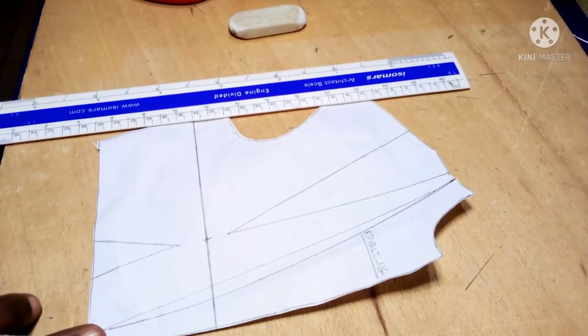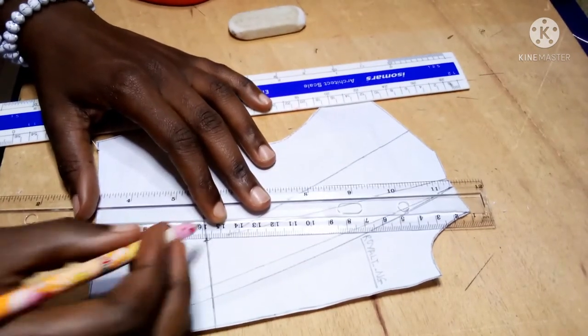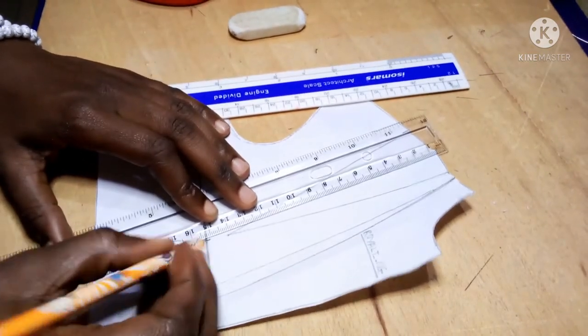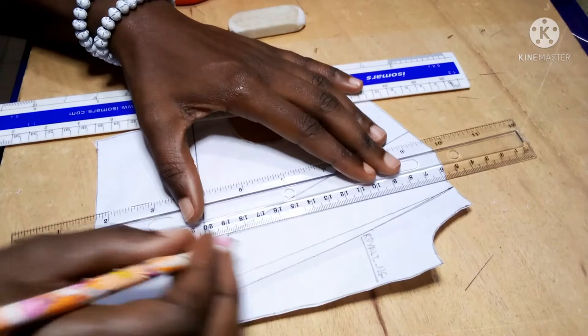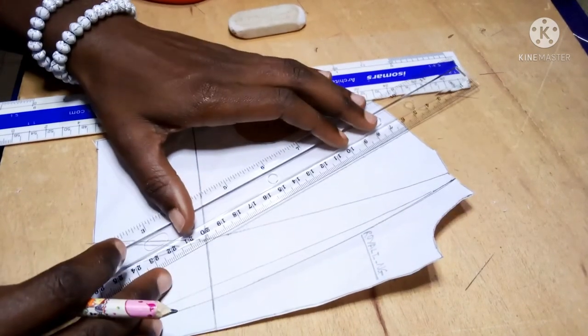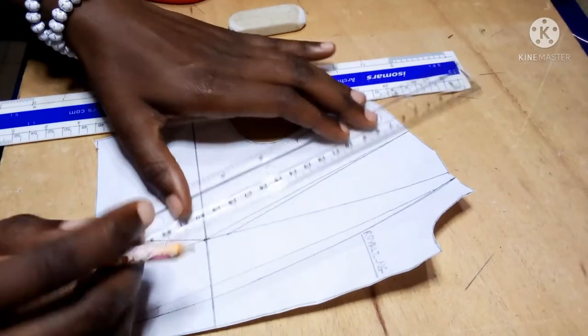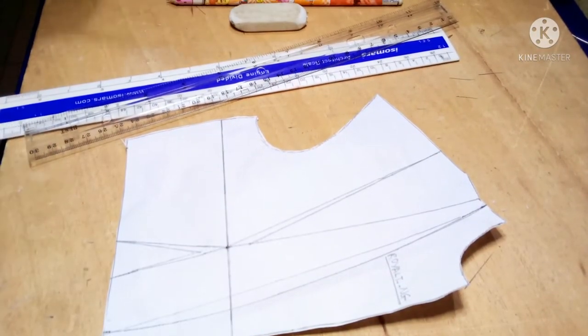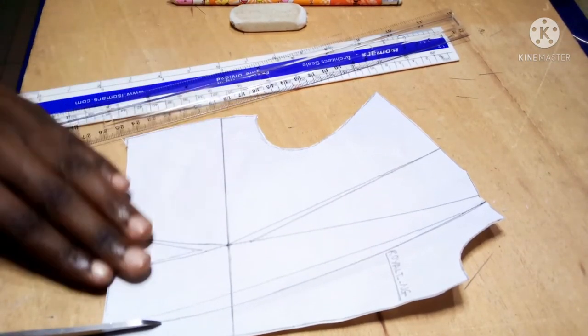And the next thing I will be doing is to redraw my waist dart and my shoulder dart to touch my apex, because I'll be transferring the darts to other positions. This is what we have now. At this junction I would cut out this part of the design.